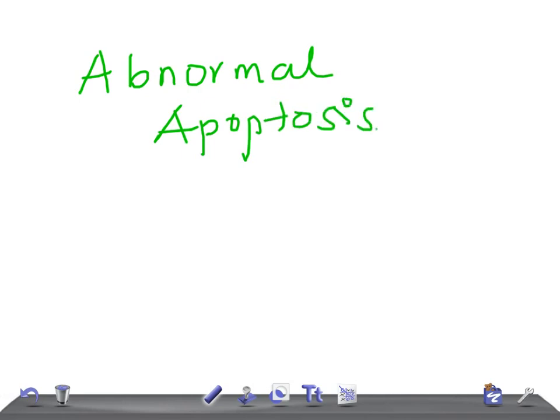I'm going to talk very briefly about this. This is a small topic — I can't call it the most important topic for your USMLE Step 1, but if you know it very well, it's definitely helpful for medical students and for your USMLE examination. Apoptosis within normal limits is beneficial for the body. However, if there's too much or too little apoptosis, it leads to abnormal conditions.